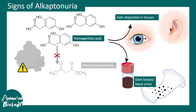Homogentisic acid can also get deposited into specific tissues, like the white part of the eye — the sclera — and in the ears, where the black spot is also visible. These deposits are known as ochronosis.